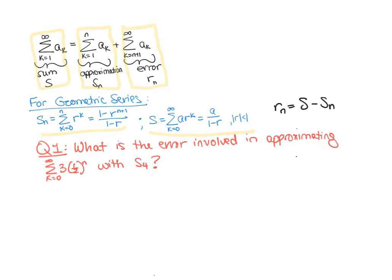For this example, we are asked for the error involved in approximating the sum k equals zero to infinity of three times one half to the k with S sub four.